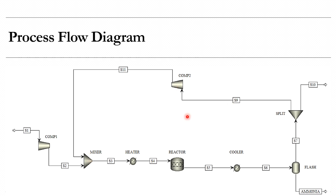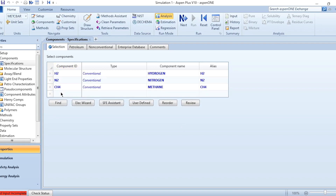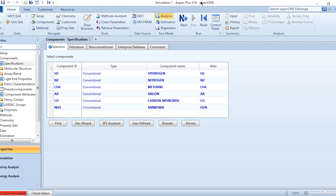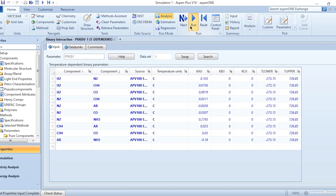In our previous exercise we just simulated this plant, but now our task is to obtain 96% or more ammonia purity from the product stream. This is the optimization objective. We will first go to Aspen Plus, build the diagram, and enter all the required operational conditions. We will add the required components: hydrogen, nitrogen, CH4, argon, CO, and ammonia, and select Peng-Robinson as the property package.